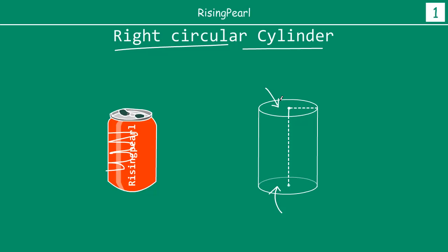So all right circular cylinders, they have two circles, one at the top, this circle, one at the bottom, this circle and then this curved part. So that makes a right circular cylinder.